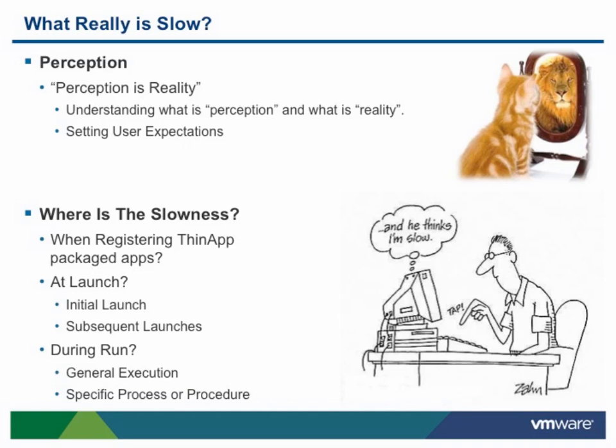Regarding ThinApp, there are three general categories defined around the interaction of a ThinApp packaged application. The first is when registering the ThinApp application. Next is at initial launch or execution of the ThinApp packaged application — this can also be subdivided into initial launch and subsequent launch categories. And last is during runtime of the ThinApp packaged application, which can also be subdivided into general execution and specific process or procedure categories as well.